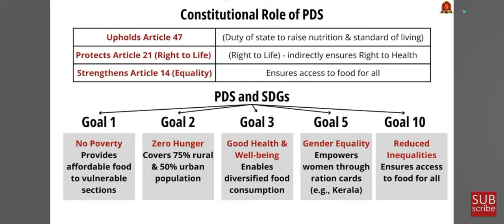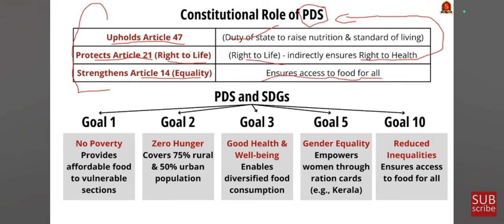It is important to understand the relation between constitutional articles and PDS. Article 47 mentions it is the duty of the state to raise the nutrition and living standard, making PDS a point of focus. Article 21 on the right to life indirectly ensures the right to health, which is interlinked with the PDS system. Article 14 on equality ensures equal access to food for all. Regarding SDG linkages: Goal 1 on no poverty aligns with PDS providing affordable food to vulnerable sections. Goal 2 on zero hunger is addressed since PDS covers 75% rural and 50% urban population. Goal 3 on good health and well-being is a direct outcome of PDS, and Goal 5 on gender equality and Goal 10 on reducing inequality are also related.